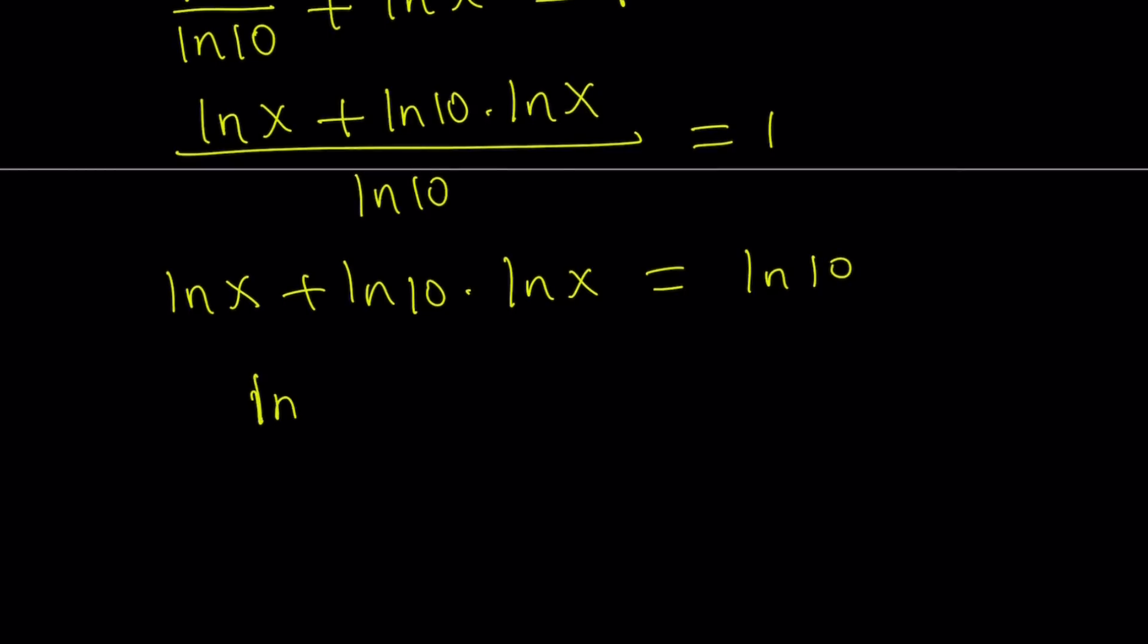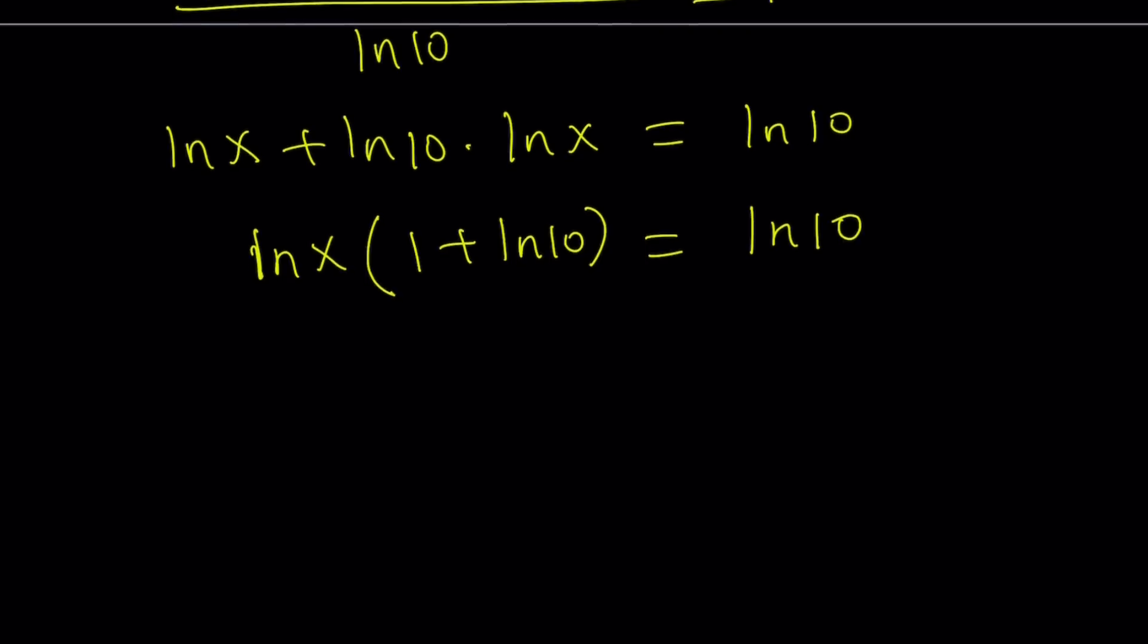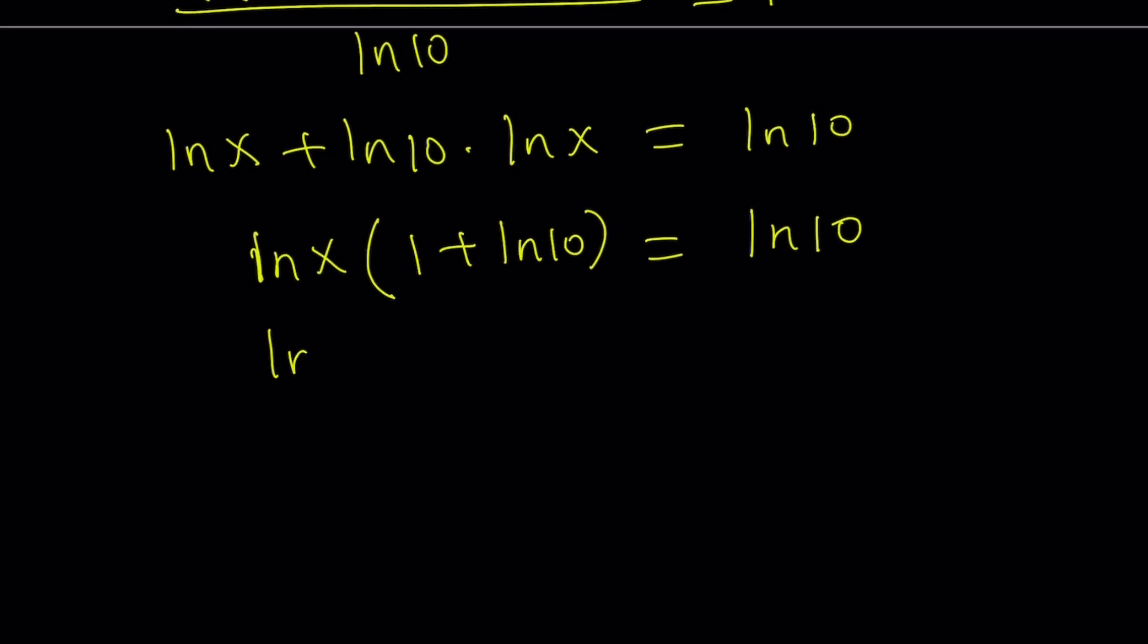I can cross multiply ln x. Let me take my time here. And now we're going to factor out ln x. We factor out ln x, we get 1 plus ln 10 equals ln 10.